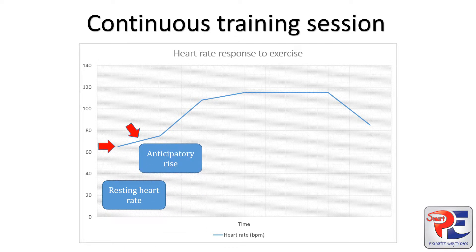This next section of the graph we could assume would be the anticipatory rise. The anticipatory rise happens before exercise. You will be able to identify it on a graph because it's quite a small increase — it's not really steep. As this happens before exercise, the main reason it happens is to increase heart rate and blood pressure, which will increase oxygen delivery to working muscles. It is adrenaline, a hormone, that causes this. So before you've even started exercising, your body is starting to respond and prepare you for the exercise that you're about to do.